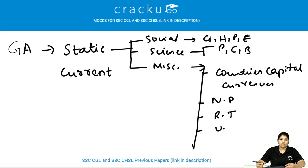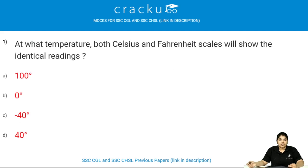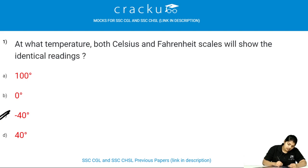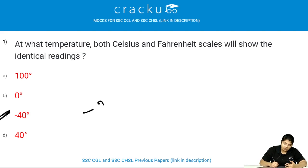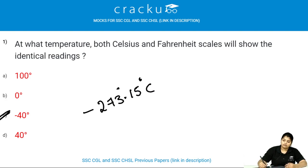Let's see the first question. At what temperature do both Celsius and Fahrenheit scales show the identical reading? At minus 40 degrees, both the Celsius and Fahrenheit scales will show the identical reading. The absolute zero temperature on the Celsius scale is minus 273.15 degrees centigrade.